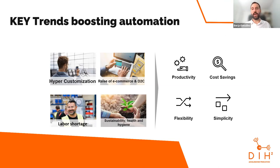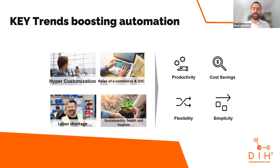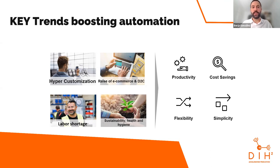Then we have the rise of e-commerce and direct-to-consumer approaches — the Amazons of the world — where more and more companies are using e-commerce to reach customers directly. If they do not adapt their manufacturing efficiencies, it would be very hard to compete. There's also labor shortage, especially in manufacturing areas, where we don't find enough people to work in warehouses or do certain jobs that can be automated. That automation then creates new jobs that somebody needs to maintain and program.